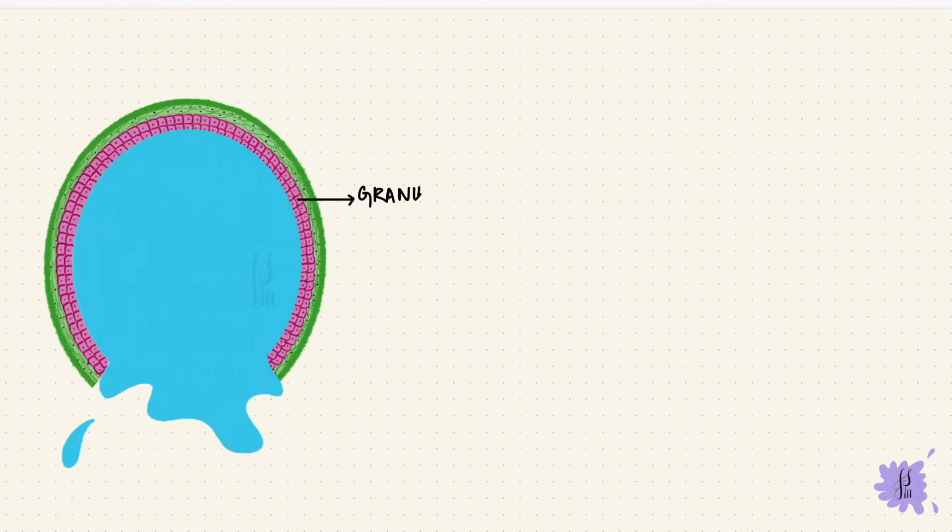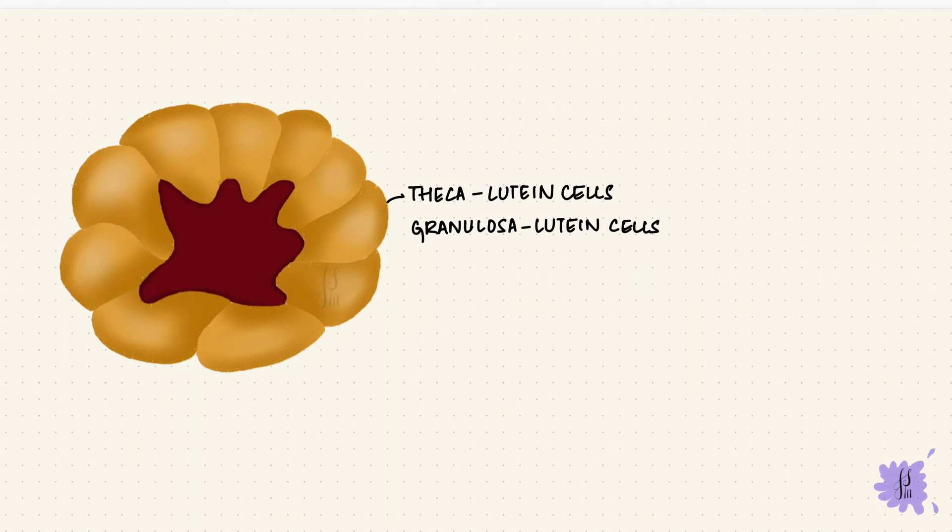So what's left behind? The granulosa and the theca cells, under the effect of the luteinizing hormone, they become luteinized. So they become the granulosa lutein cells and the theca lutein cells. Now these cells have lots of lipids, and this whole yellow structure is called a corpus luteum, which may have a blood clot in the center from follicular rupture. So now we're in the luteal stage.